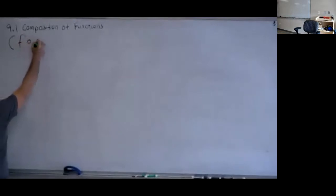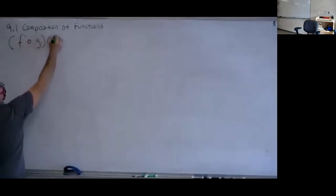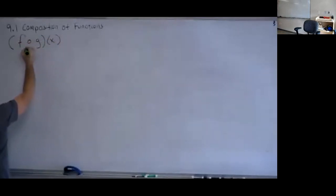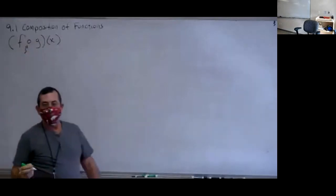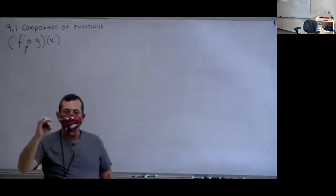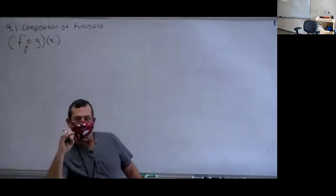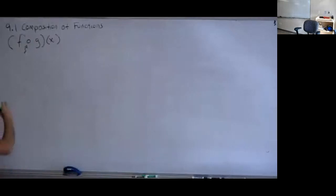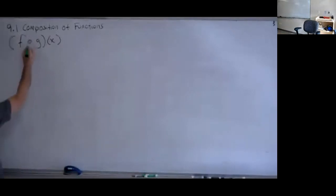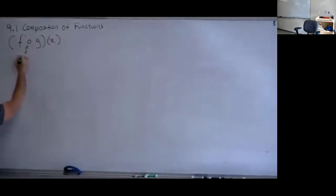There are two styles we're going to look at. The first is f composed g of x — that little symbol isn't really a zero or the letter o, it looks like a small degree symbol. That little degree symbol is what we call a composition operator.